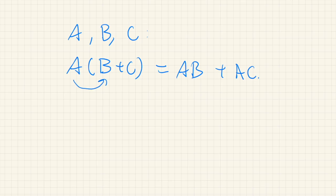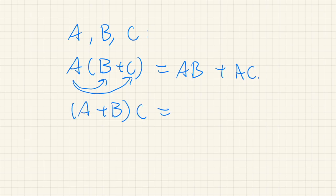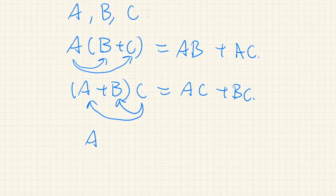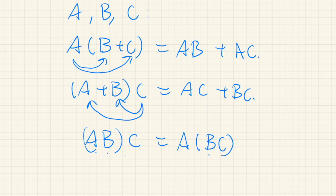Multiplication distributes over addition, just like usual numbers. And since matrix multiplication is not always commutative, we also need this type of distributive law — distribute from the right. So in this case we have AC plus BC. Also, matrix multiplication is associative: first we multiply AB and then multiply by C from the right, and that is the same as first multiplying B and C and then multiplying A from the left. These are distributive laws, and this one is associativity.